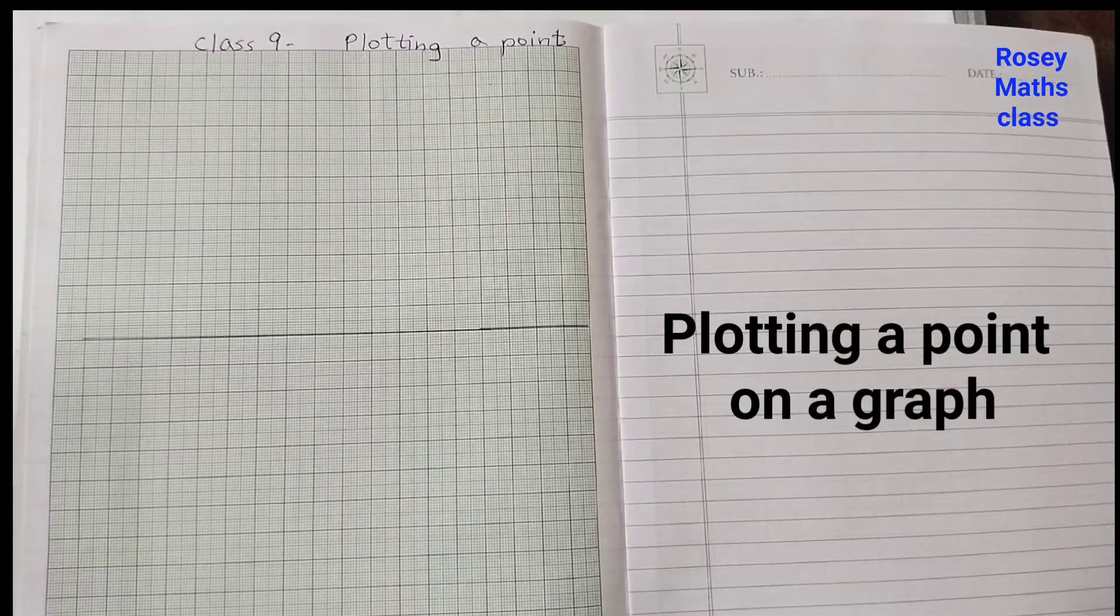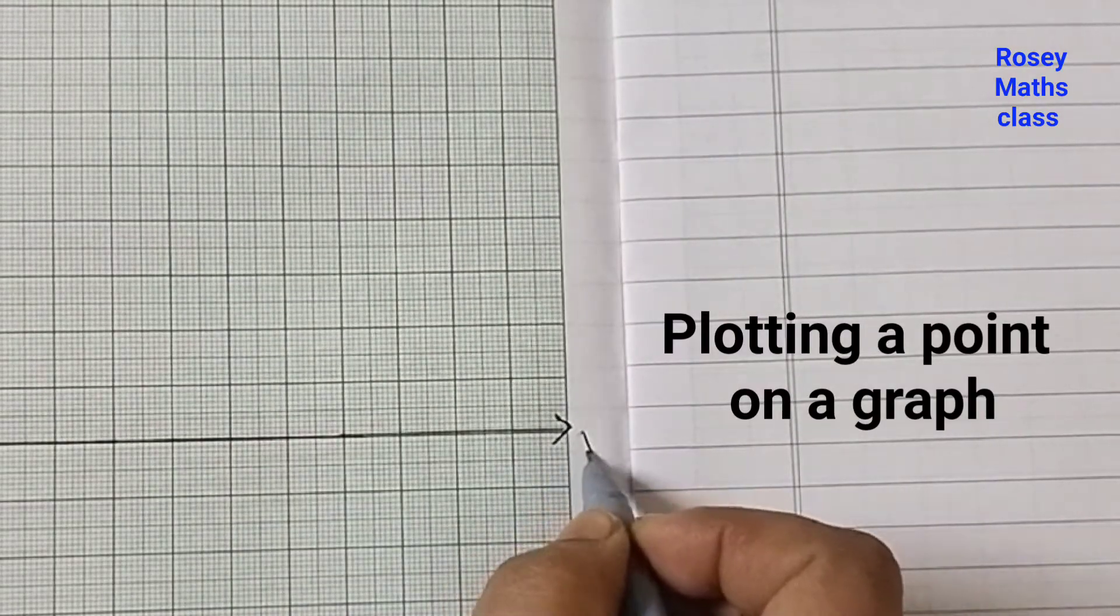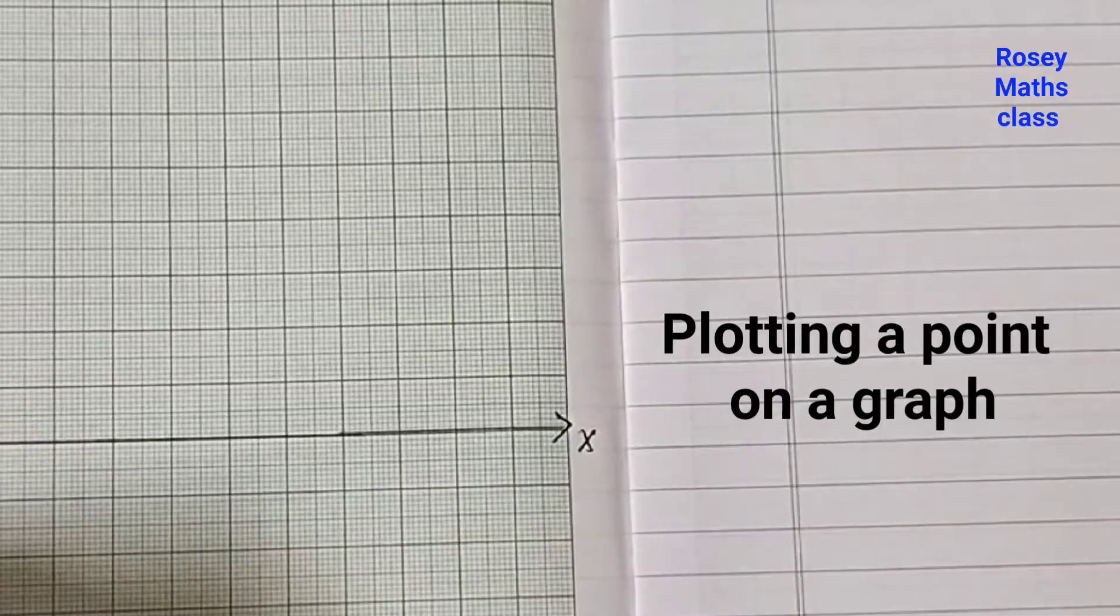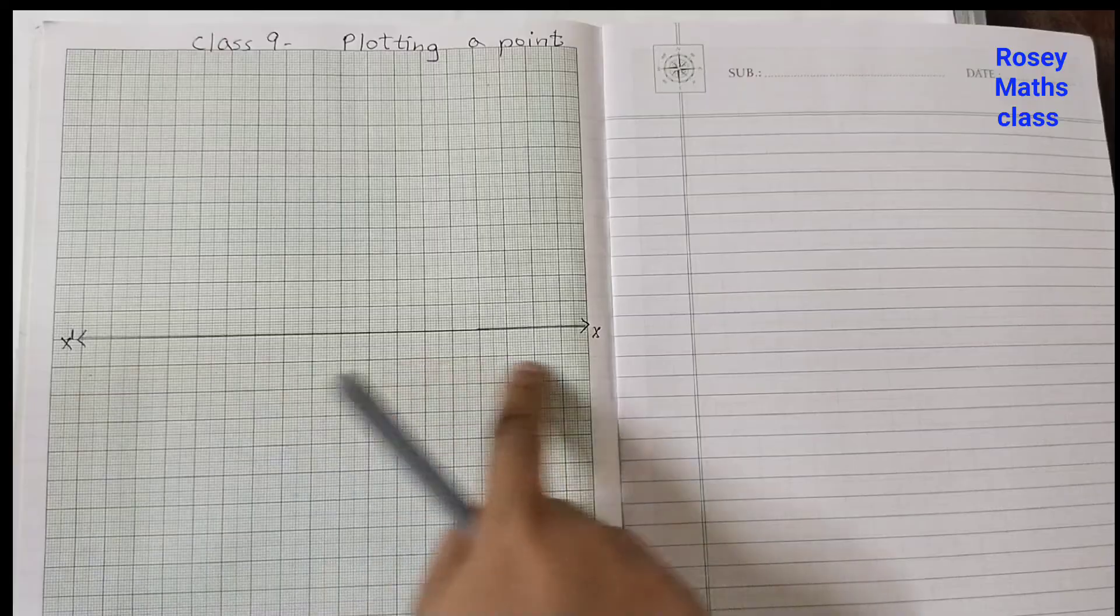Label this as X, put an arrow first, X, and the left hand side X dash. So this is your horizontal line or the x-axis.